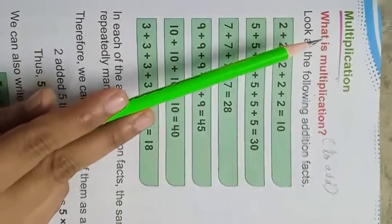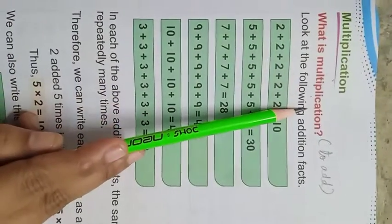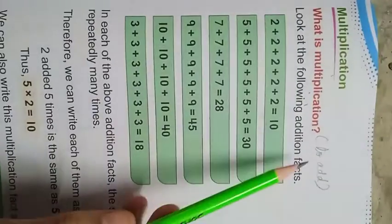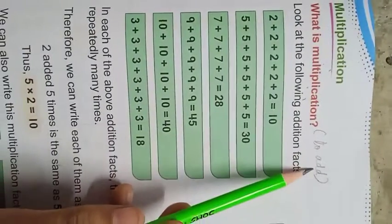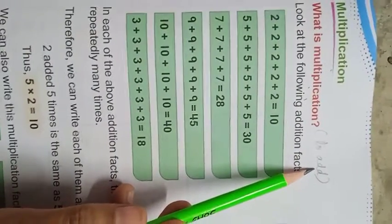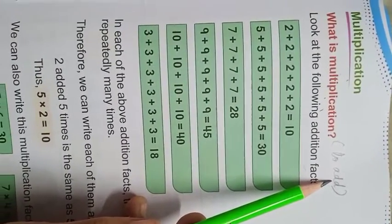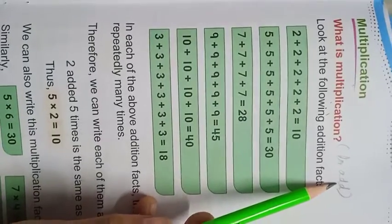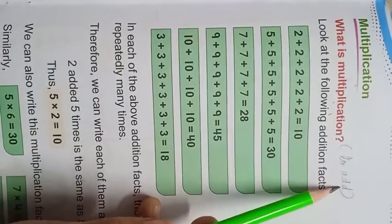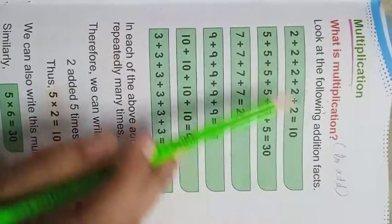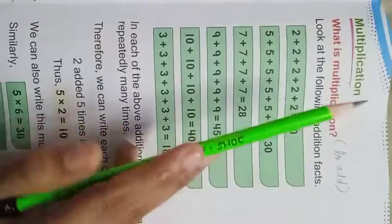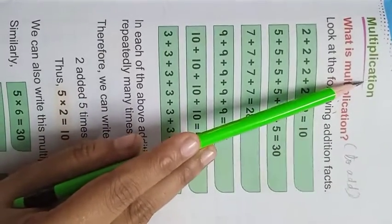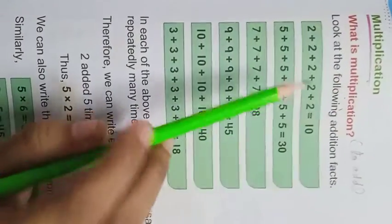Now, what is multiplication? Multiplication ka matlab kya hota hai? To add - yani jodna. Jaisa ki kids, aap ne previous classes mein add karna sikha tha. Addition se hi multiplication hota hai. Aayye dekhte hain.